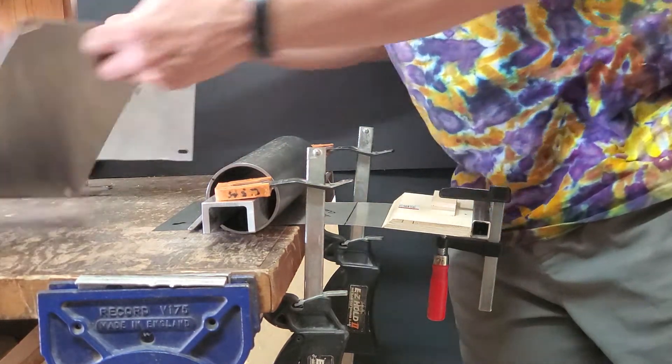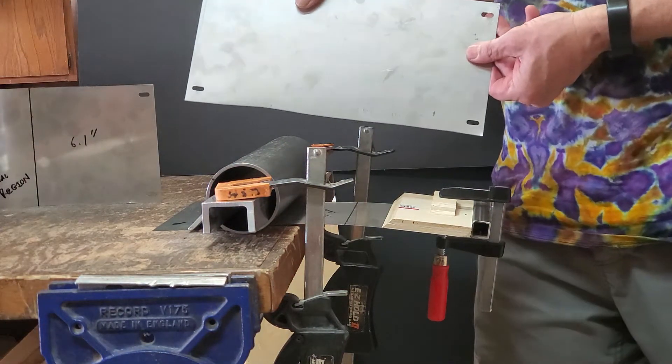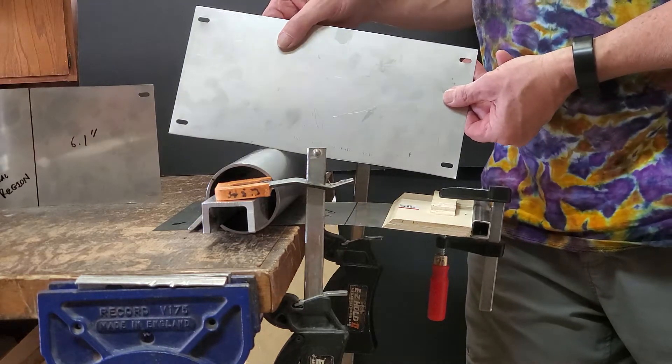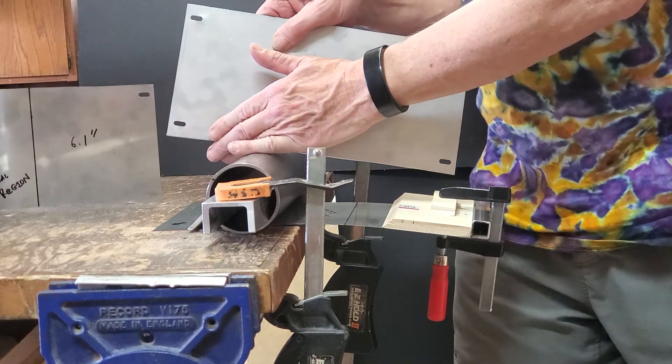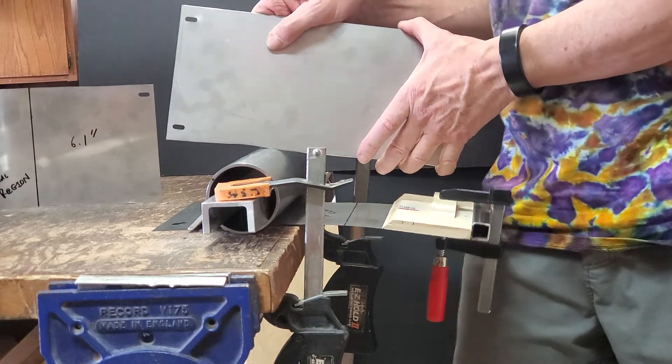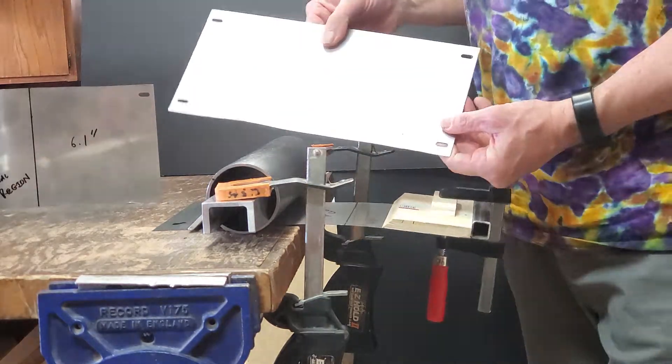What we are doing is starting with a water jet cut piece of sheet metal. This is just a six inch section. We'll be bending a 25 and a half foot long piece.